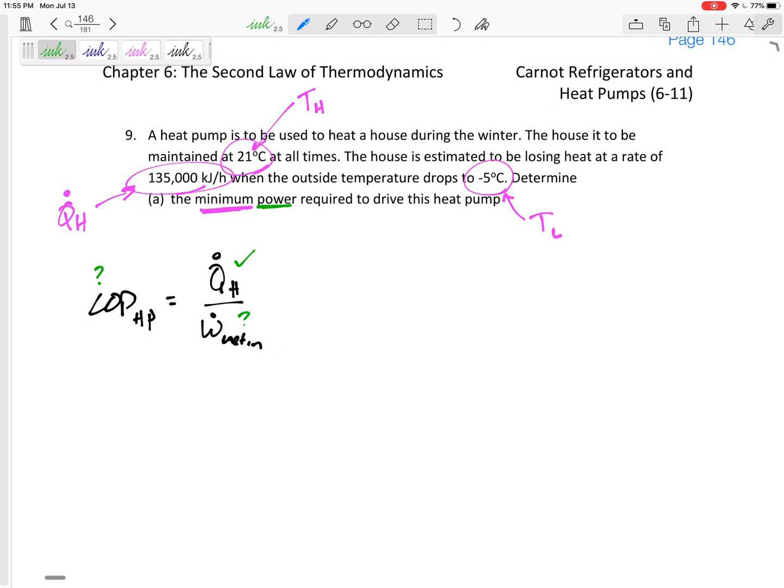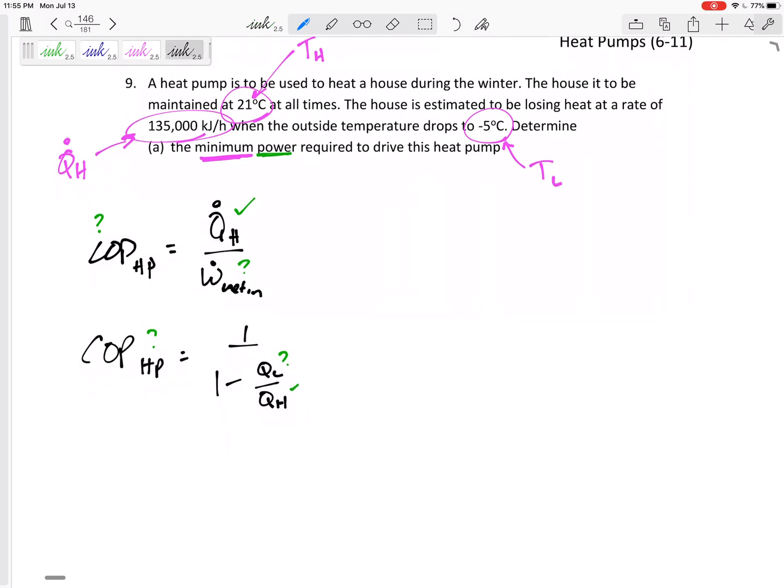How about my other equation for coefficient of performance of a heat pump: one over one minus QL over QH? Again, I don't have too many unknowns because I've got two unknowns in there.